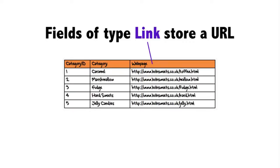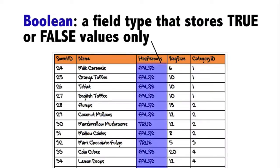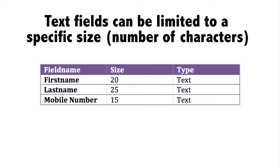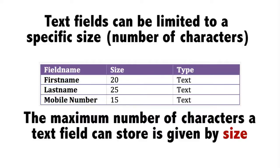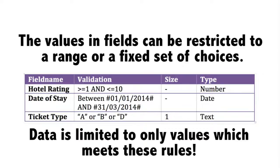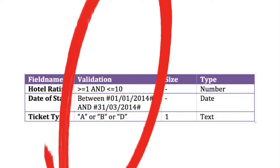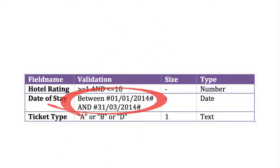Fields of type link store uniform resource locators — URLs — the web addresses we use to find web pages. Boolean fields store values which can only be true or false. Text fields in a database can have a specific length; this is the maximum number of characters that the field can store. Some fields can also have a limit put on the range of numbers, date, time or characters they contain, restricting the data to within the range — for example, numbers from 1 to 10 only, or dates from 1st January to 31st March only.